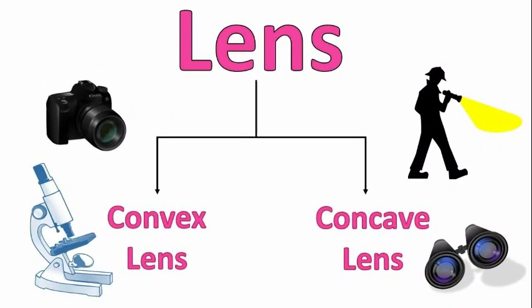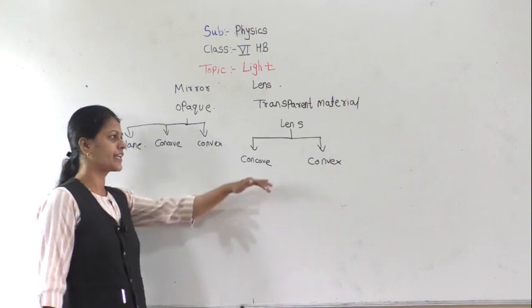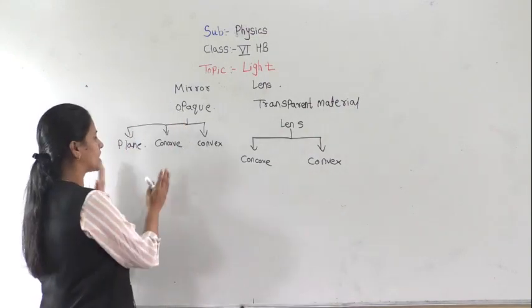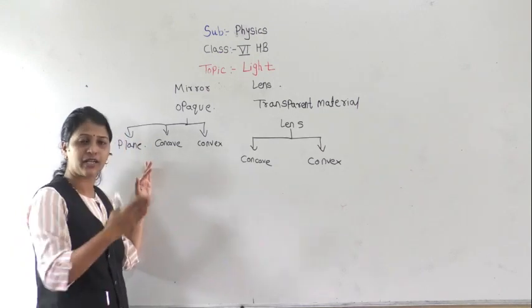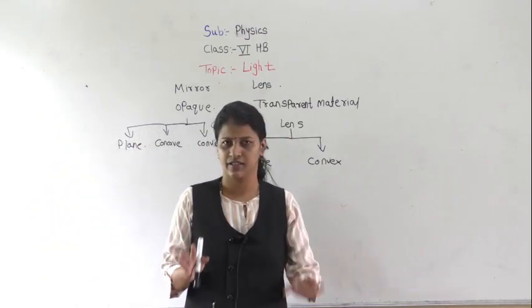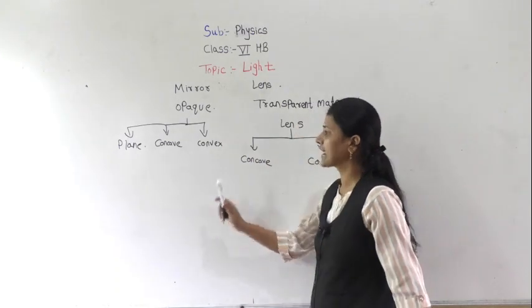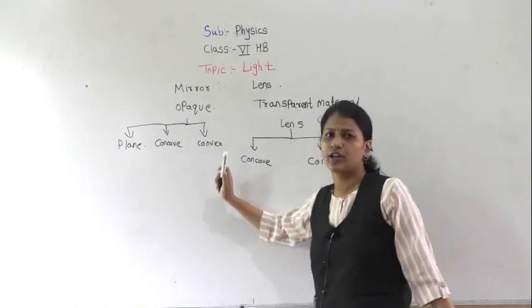Lenses are classified into two types — concave and convex. This is very important: if you have already understood the concept of the concave and convex mirror, it will be easy to understand the lenses.